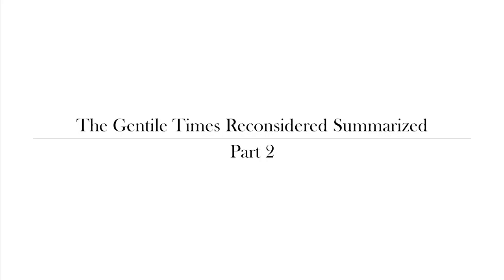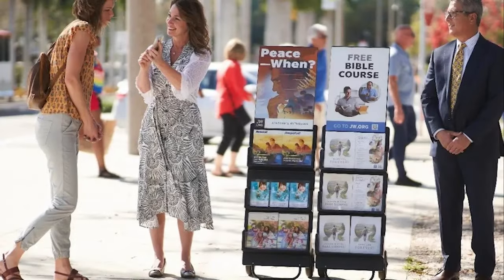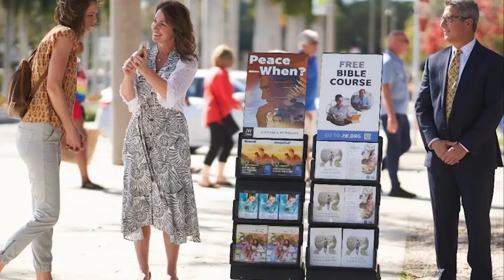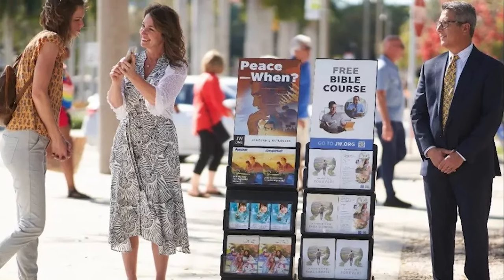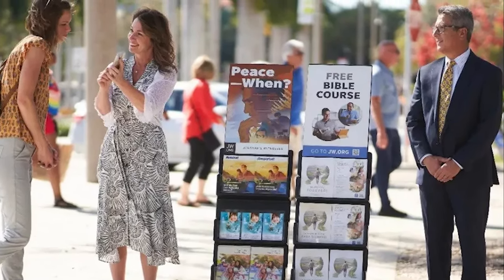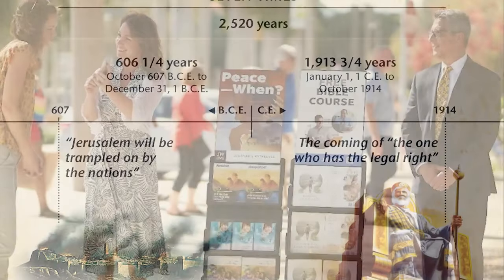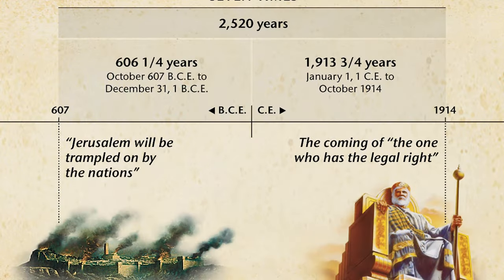Hello, my name is Austin, and this is part two in a video series that is going to summarize Karl Olaf Johnson's book, The Gentile Times Reconsidered. In our last video, we learned how for Jehovah's Witnesses, identity, purpose, and a sense of urgency are all tied to beliefs about 1914. We also summarized the interpretations and calculations that Jehovah's Witnesses used to get the 1914 date.